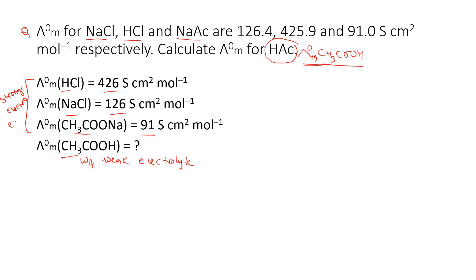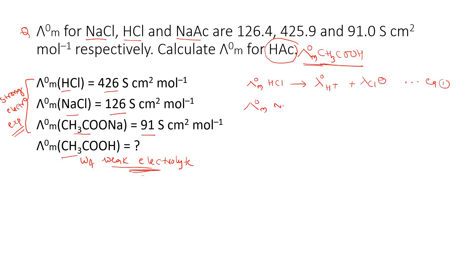The strong electrolytes can be calculated experimentally because we get a straight line. But for weak electrolytes we don't calculate experimentally — we calculate molar conductance at infinite dilution using Kohlrausch's law. So: λ°ₘ(HCl) = λ°(H⁺) + λ°(Cl⁻) — this is equation 1. And λ°ₘ(NaCl) = λ°(Na⁺) + λ°(Cl⁻) — this is equation 2.